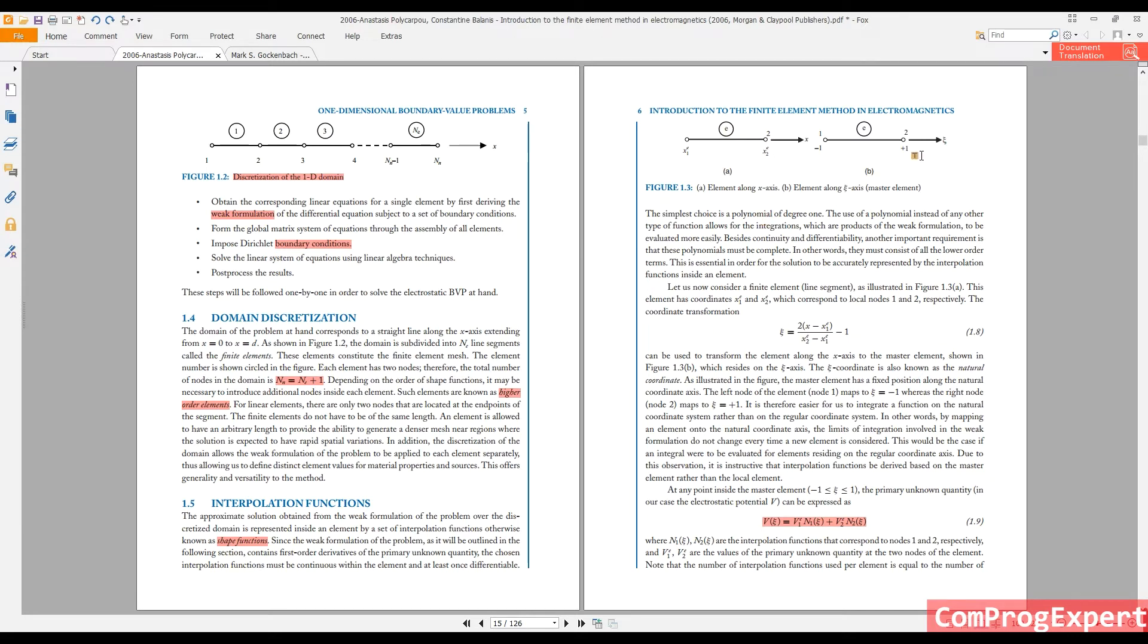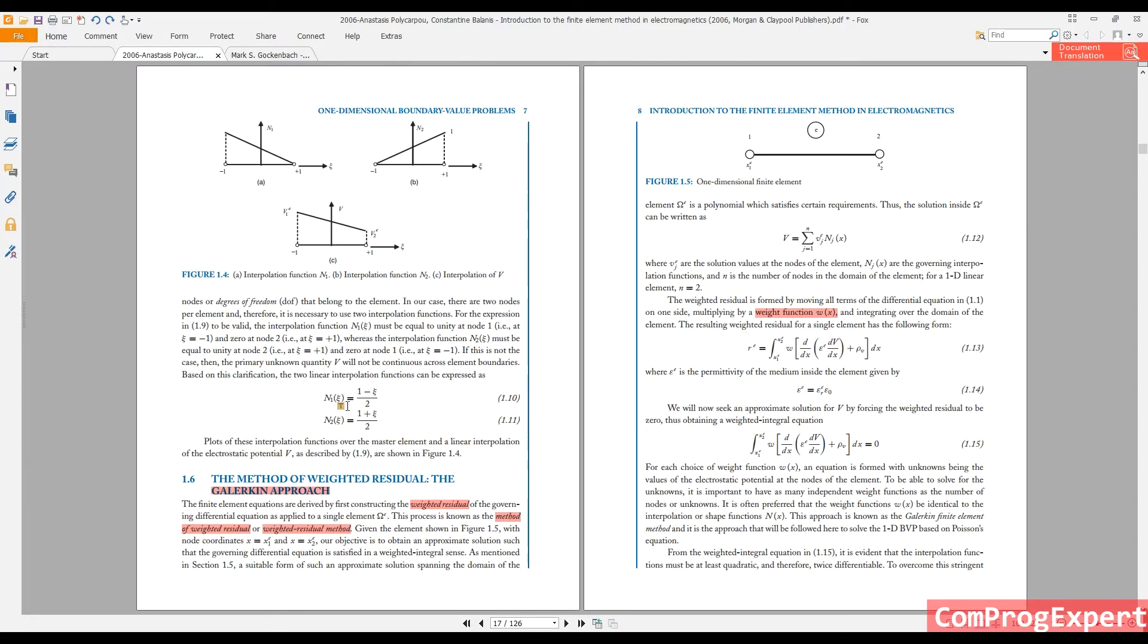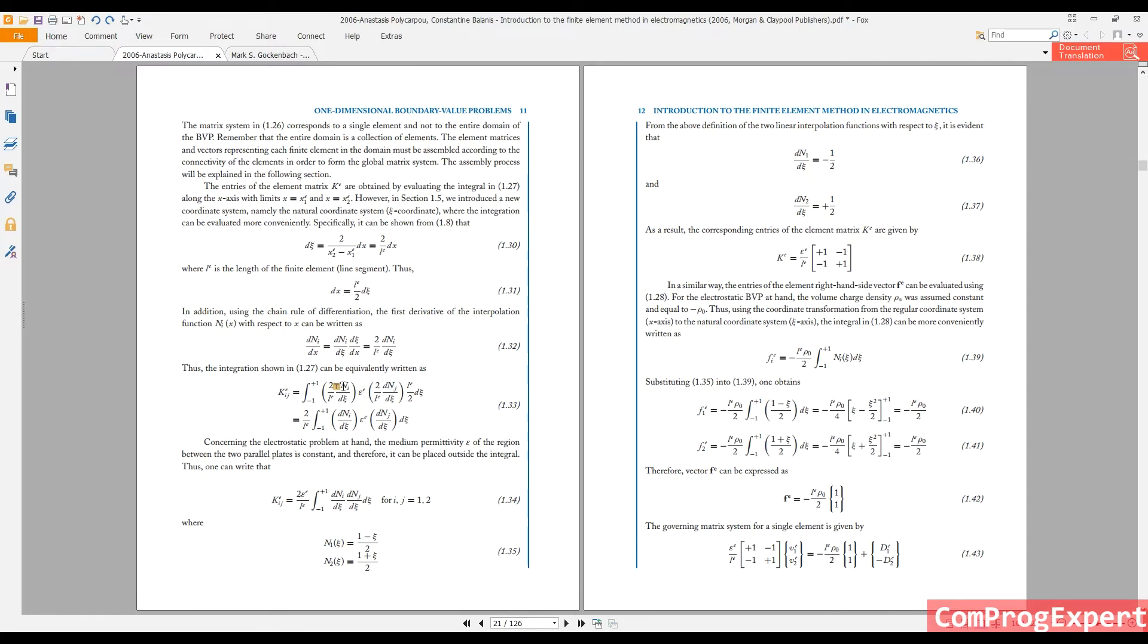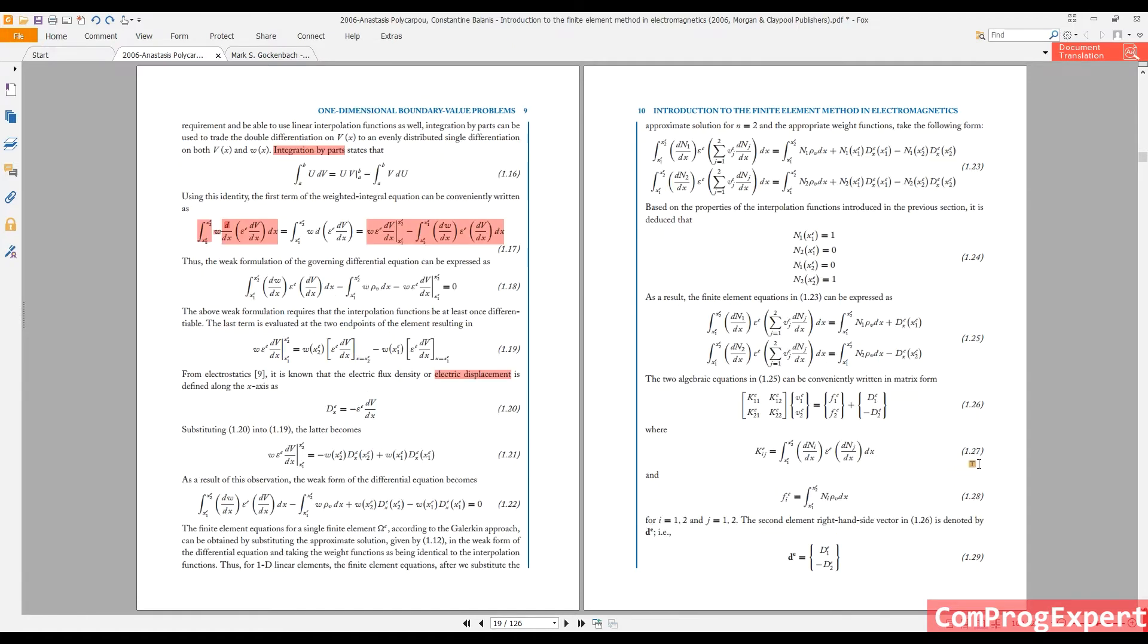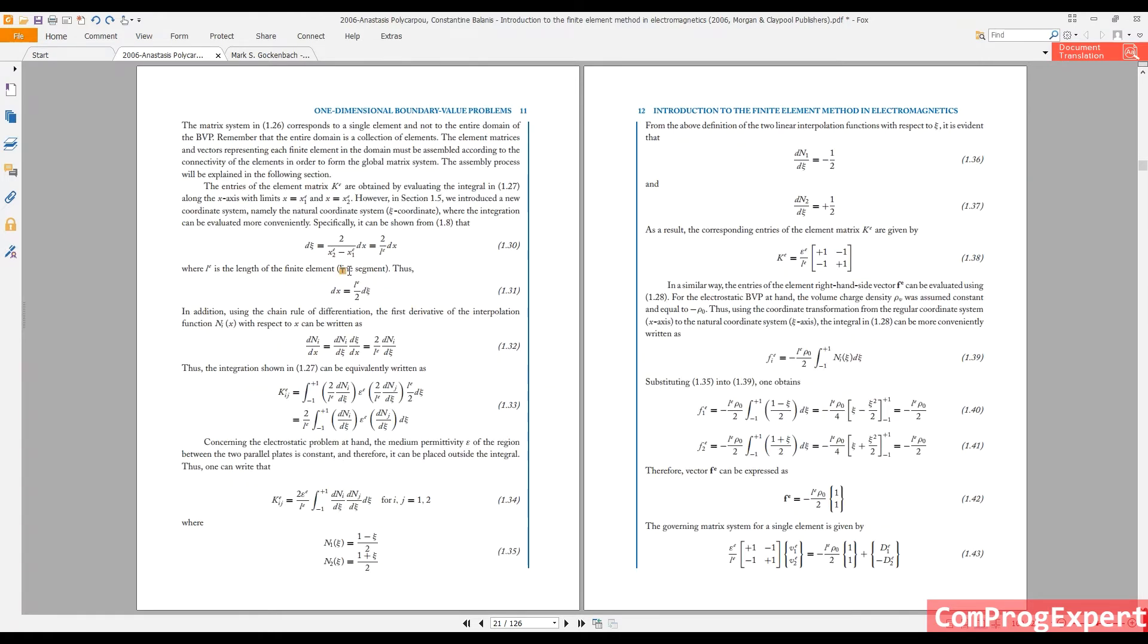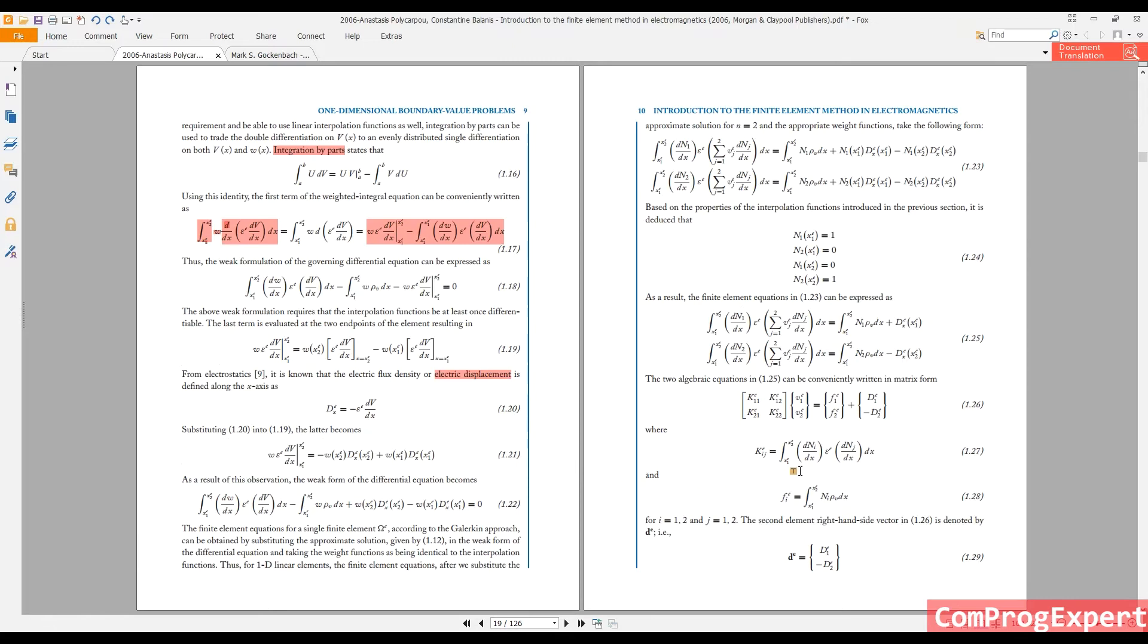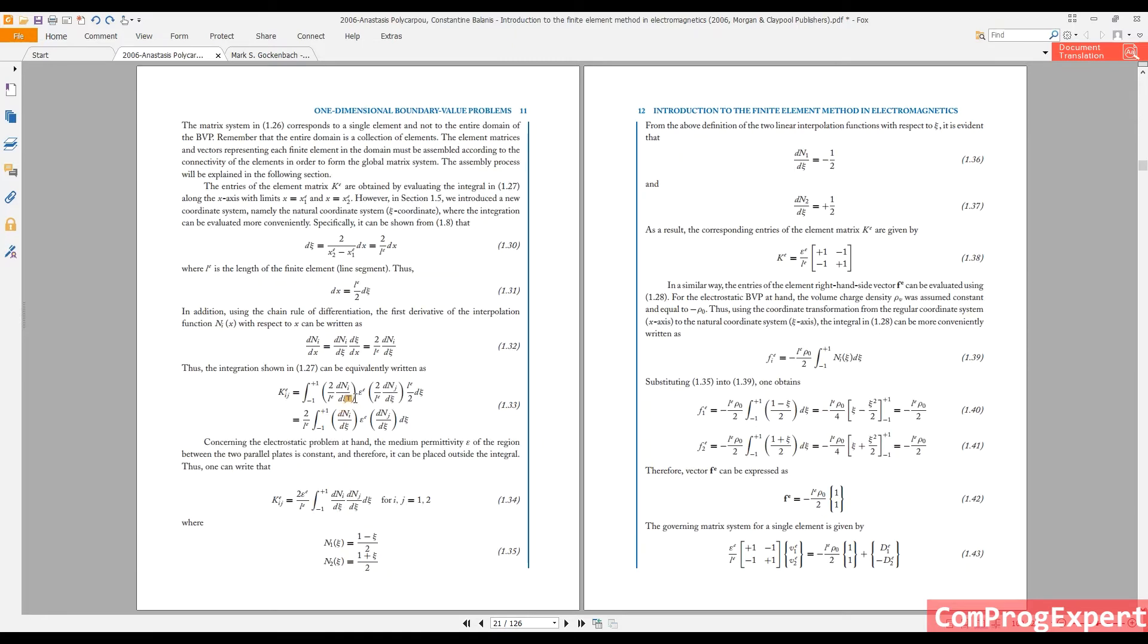So in this axis, I know the value of n1 and n2, our shape functions, as you can see here in this graph. 1 minus zeta divided by 2 and 1 plus zeta divided by 2. So here you can translate those equations, equations 1.27 and 1.28, to these equations 1.33. Instead of calculation dNi divided by dx, we can calculate dNi divided by dZeta. And in this case, we know the value of n1 and n2 in a clear form. So you can calculate these integrations.